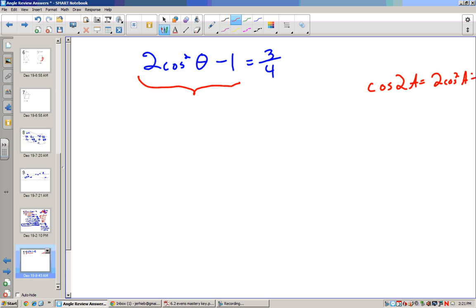So this whole thing is the same thing as cosine of 2a. So now what you do is take the arc cosine of both sides. And the arc cosine is positive and negative inverse cosine.